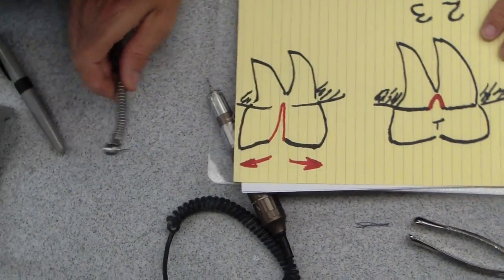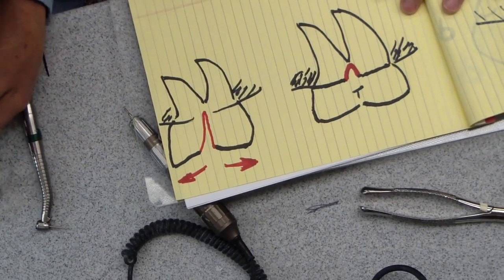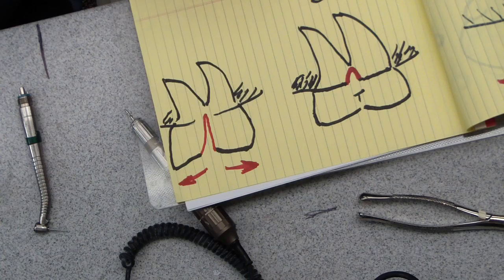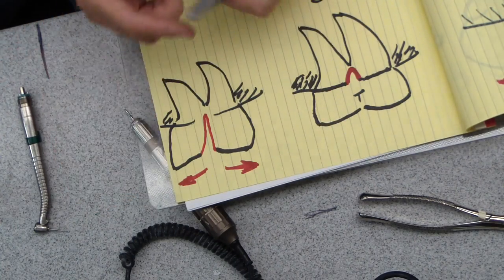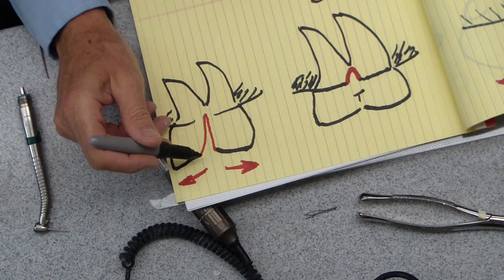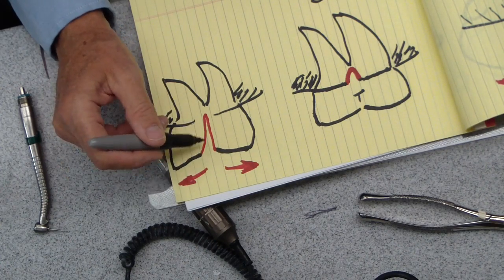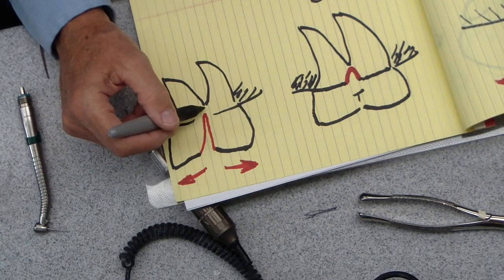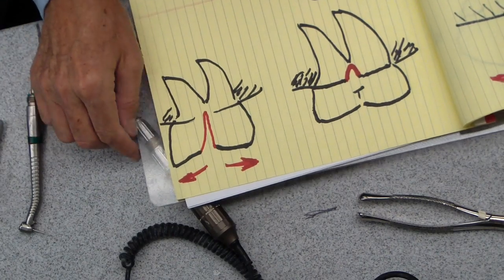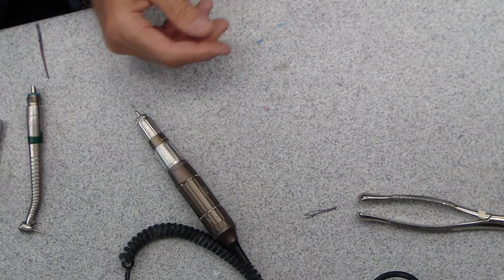I'll just go ahead and section that tooth with a burr right down almost to the furca. Now what that allows you to do, since there's no tooth on either side you can elevate against, you can elevate the mesial part against the distal part there. So by making a slot in there, right from the furca, then you'll create one half of the tooth that you can elevate against the other half.